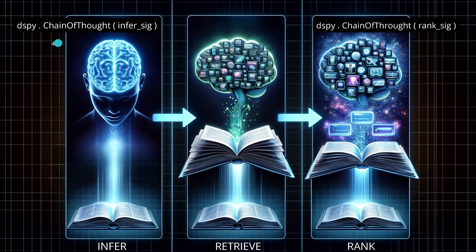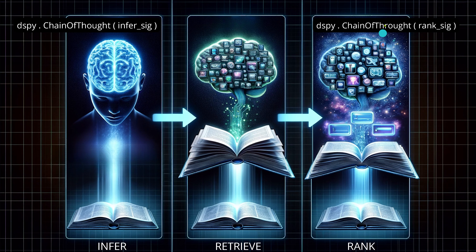Going a little deeper into the code: we have DSPy modules. As shown in video number two, we have the Chain of Thought and we need to give it a signature. Chain of Thought is a DSPy model, and a signature — those are the two important objects. We have a retrieve step with an external database, and then again a ranking signature with Chain of Thought.